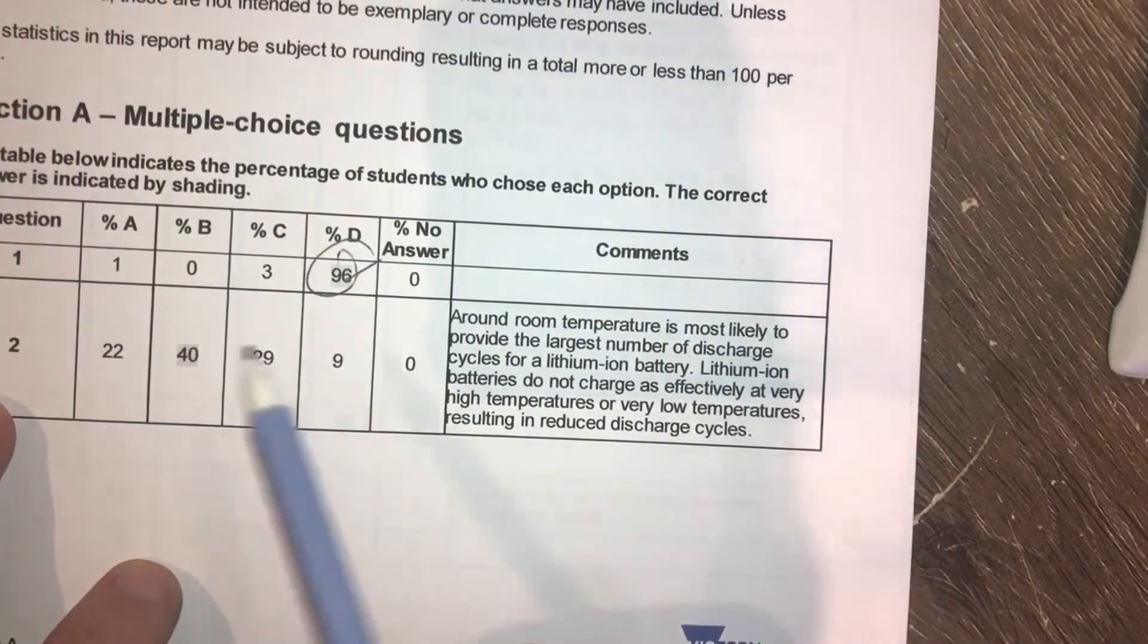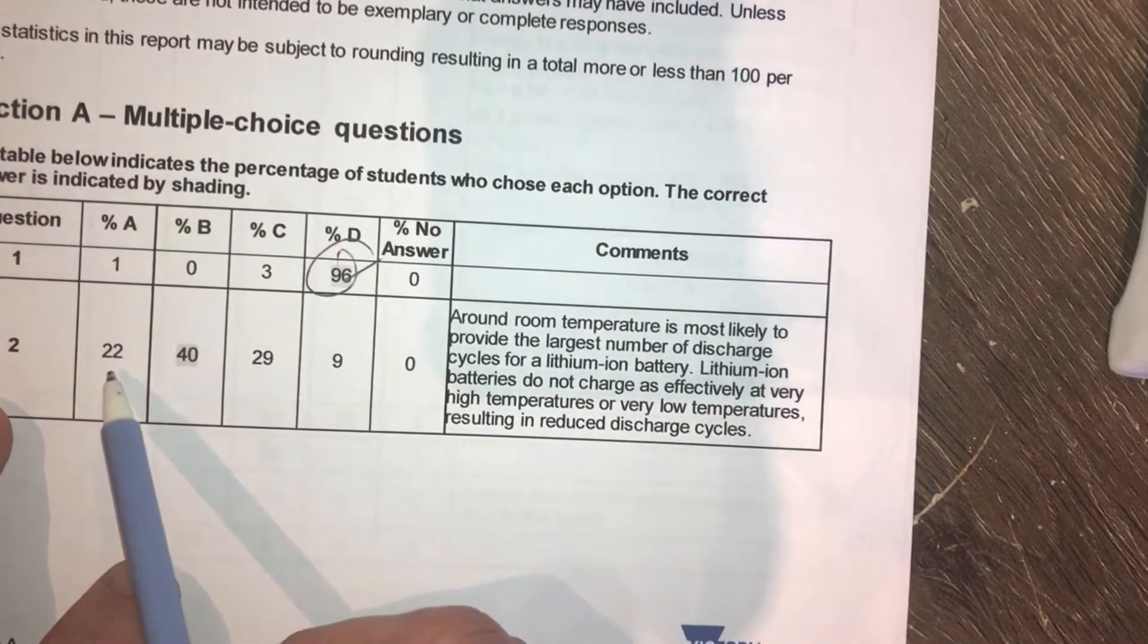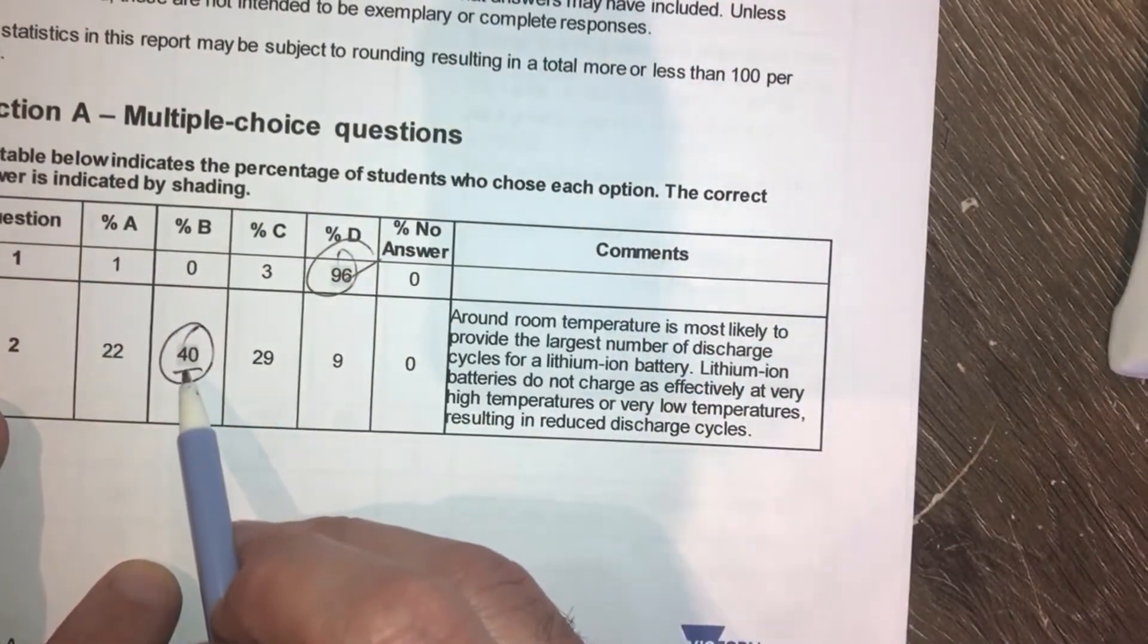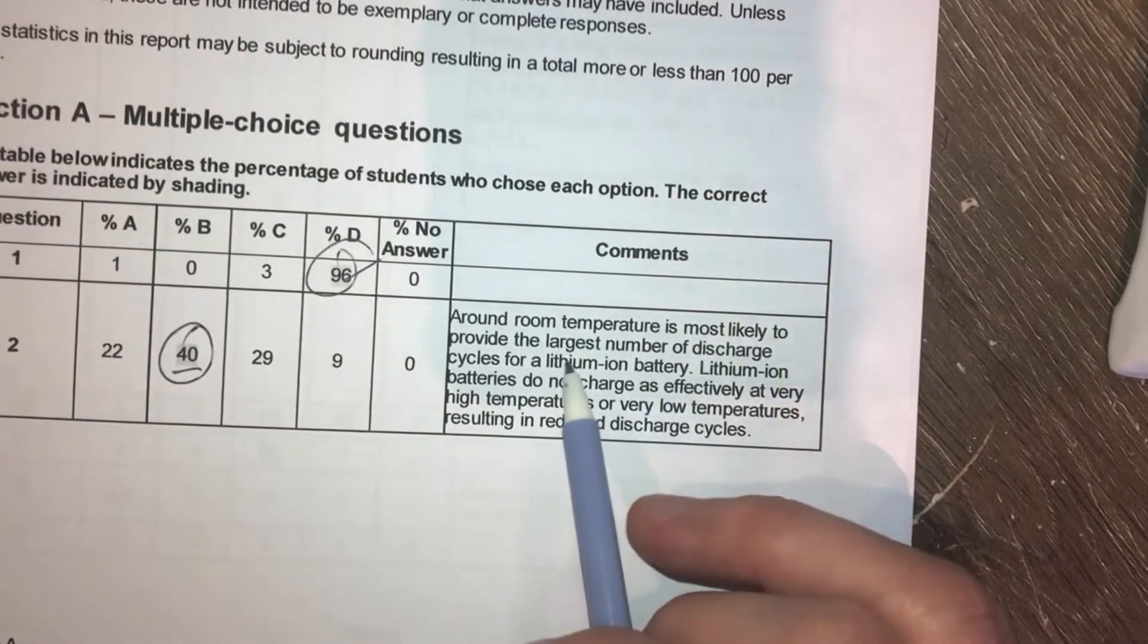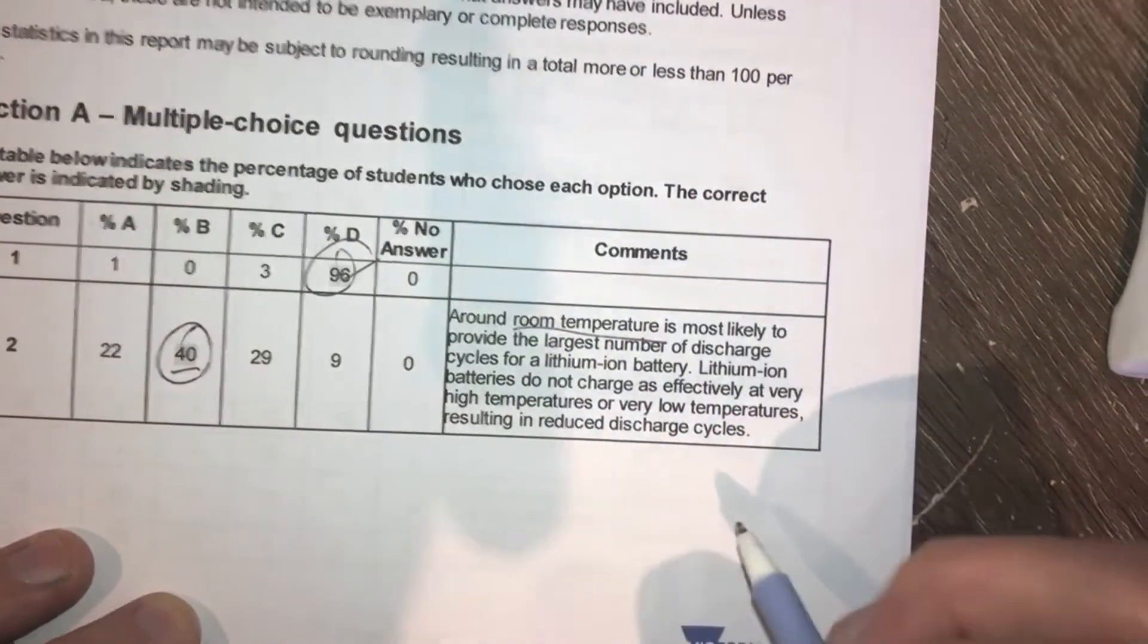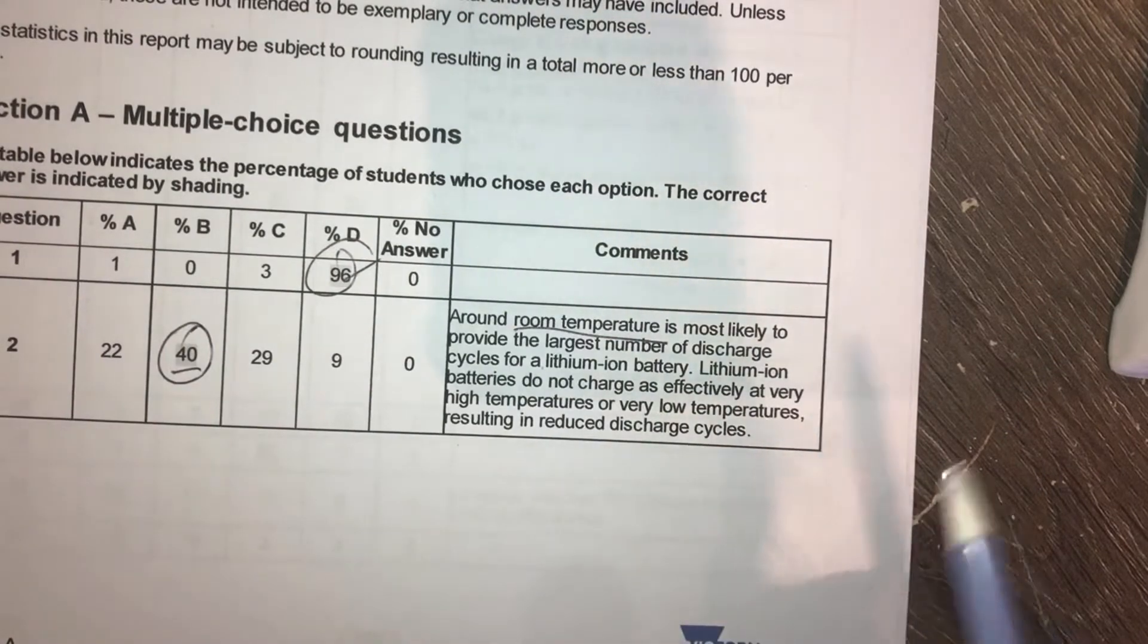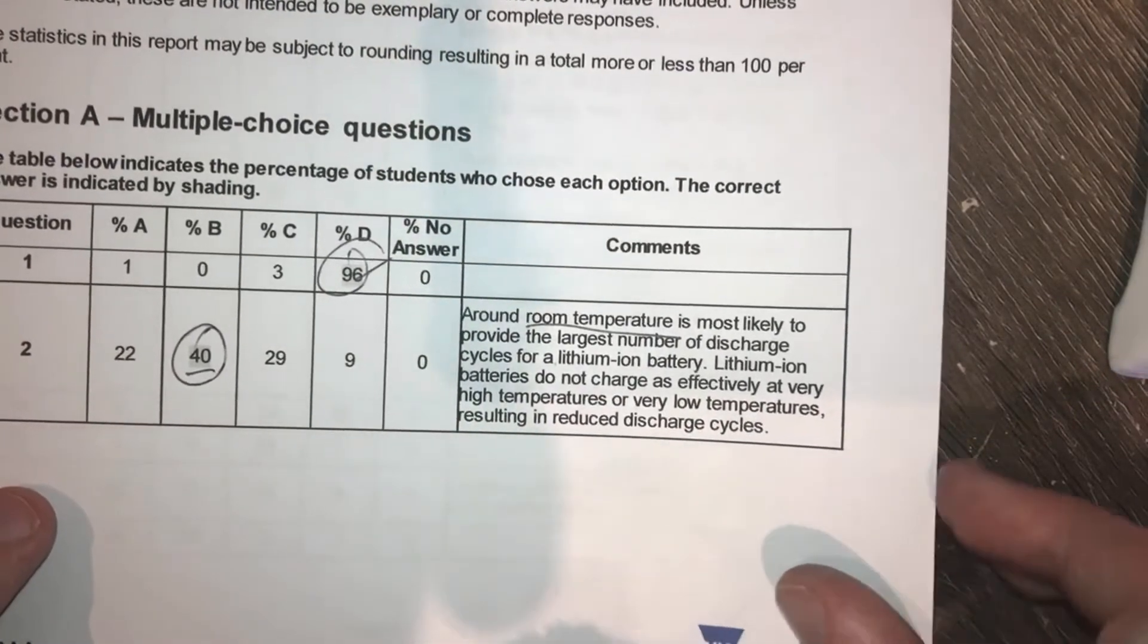Question 2. I asked about the, what was it about? Batteries. That's right. So batteries, you can see the correct answer here was B. However, it was only 40% of people got that right. So it seems like that one was a bit of a challenge. You can see the comments here. Around room temperature is likely to provide the largest number of discharge cycles. So again, these guys are talking about the temperature of the room, which is why these batteries are made, because they're being made to work in your appliances. So you wouldn't really want to try and make a battery that works outside those temperatures.